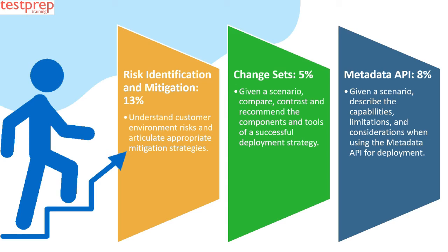Number six: Change Sets, 5%. Given a scenario, compare, contrast, and recommend the components and tools of a successful deployment strategy. Number seven: Metadata API, 8%. Given a scenario, describe the capabilities, limitations, and considerations when using the Metadata API for deployment.